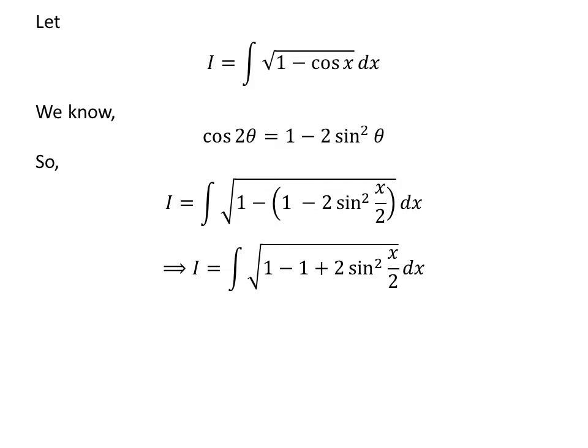Removing the bracket gives us I equals the integral of square root of 1 minus 1 plus 2 times sine squared of x over 2. Since 1 minus 1 is 0, we are left with the integration of square root of 2 times sine squared of x over 2 with respect to x.